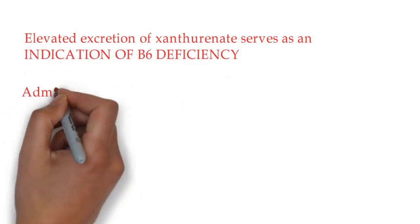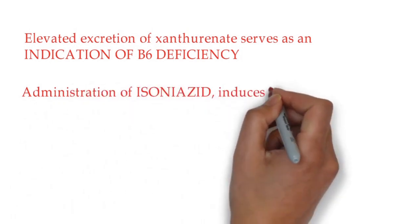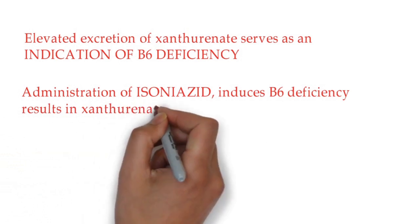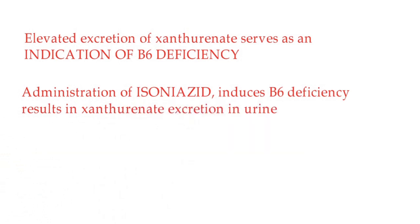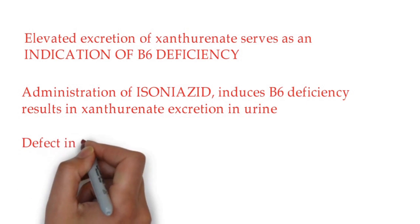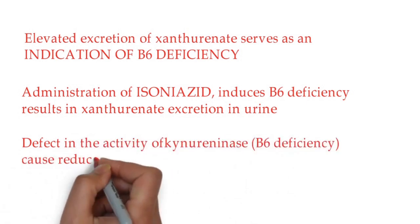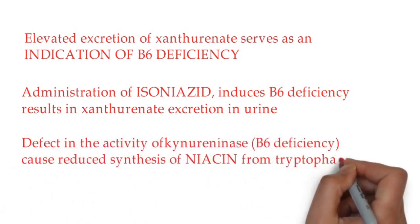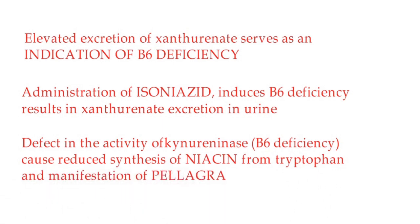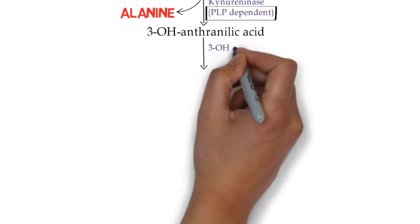Elevated excretion of xanthurenate serves as an indication of vitamin B6 deficiency. Administration of isoniazid, an anti-tubercular drug, induces B6 deficiency resulting in xanthurenate excretion in urine. Defect in the activity of kynureninase also causes reduced synthesis of vitamin niacin from tryptophan and manifestation of pellagra.